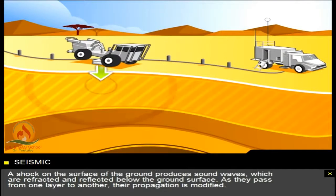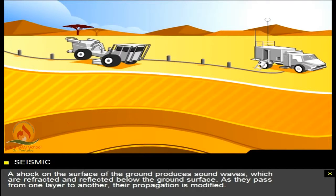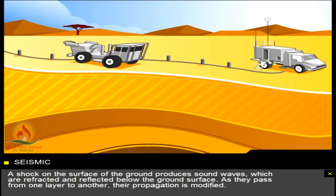A shock on the surface of the ground produces sound waves, which are refracted and reflected below the ground surface. As they pass from one layer to another, their propagation is modified.